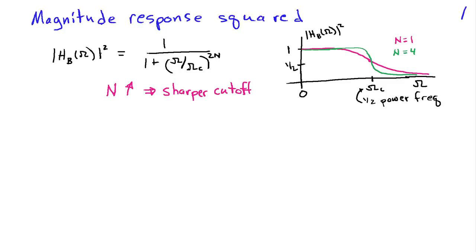Continuous time Butterworth filters serve as a useful example of how continuous time filters are specified and designed. The Butterworth filter in particular is given by a magnitude response squared that takes a particularly simple form: 1 divided by 1 plus the quantity omega divided by omega c raised to the 2nth power. n is said to be the order of the filter, and you can see that this filter is going to have a gain of 1 at DC, or when omega is equal to 0.